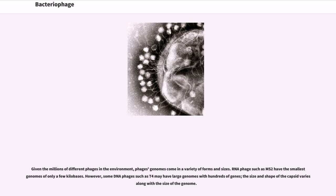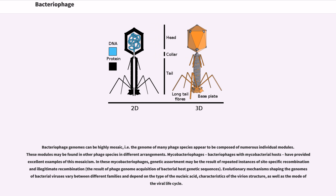Given the millions of different phages in the environment, phage genomes come in a variety of forms and sizes. RNA phages such as MS2 have the smallest genomes of only a few kilobases. However, some DNA phages such as T4 may have large genomes with hundreds of genes; the size and shape of the capsid varies along with the size of the genome. Bacteriophage genomes can be highly mosaic — the genome of many phage species appears to be composed of numerous individual modules that may be found in other phage species in different arrangements. Mycobacteriophages have provided excellent examples of this mosaicism, with genetic assortment resulting from repeated instances of site-specific and illegitimate recombination, as well as phage genome acquisition of bacterial host genetic sequences.